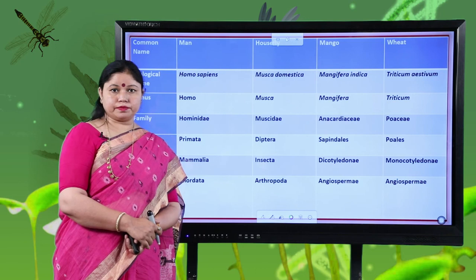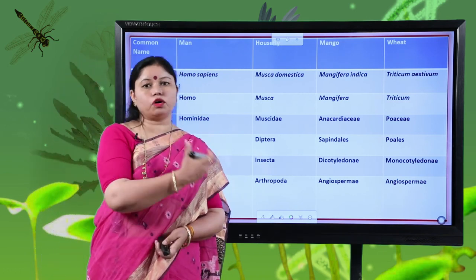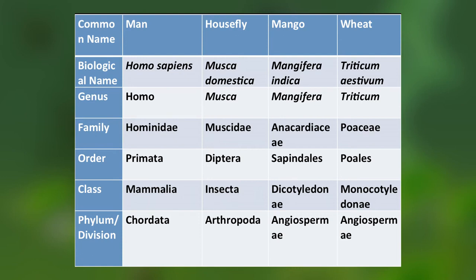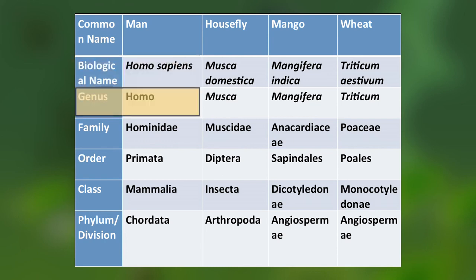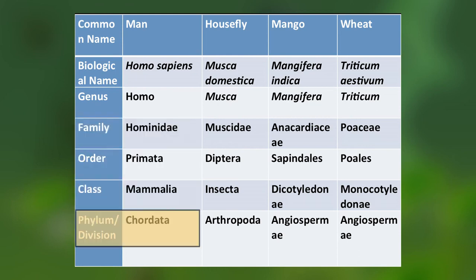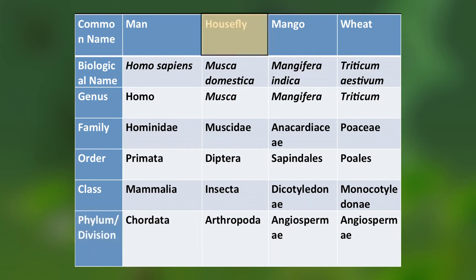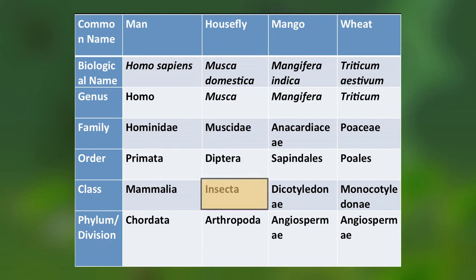Let us take a few examples and understand the different taxonomic categories to which various organisms belong. For humans: biological name Homo sapiens, genus Homo, family Hominidae, order Primata, class Mammalia, phylum Chordata. For the housefly: biological name Musca domestica, genus Musca, family Muscidae, order Diptera, class Insecta, phylum Arthropoda.